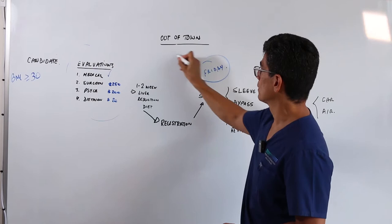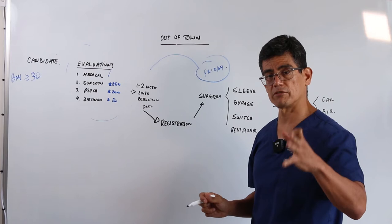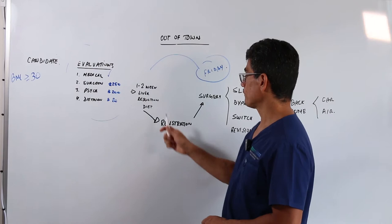Now, two weeks before the surgery, between one and two weeks before the surgery, you will be on a special liver reduction diet. A dietitian will explain that to you in detail.